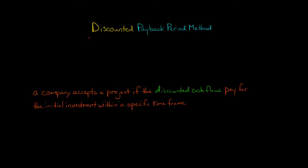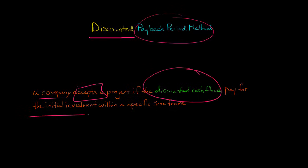In this video, we're going to discuss the discounted payback period method. The discounted payback method says that a company is going to accept a project if the discounted cash flows that it receives for that project pay for the initial investment within a specific time frame. This is basically the same thing as the regular payback method, only we're taking into consideration the time value of money by discounting the cash flows.